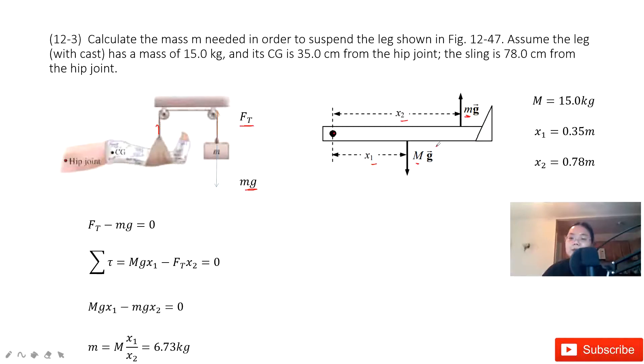So we can find these two directions are opposite. We can write the net torque equal to Mg x1 minus small mg x2, and then get the function for small m in terms of known quantities. Get the final answer. Thank you.